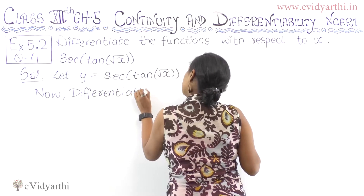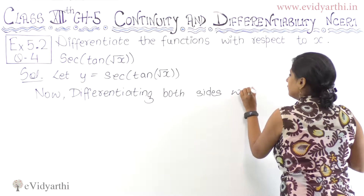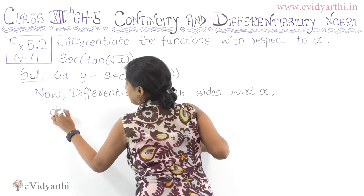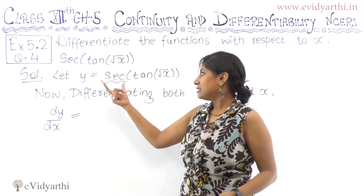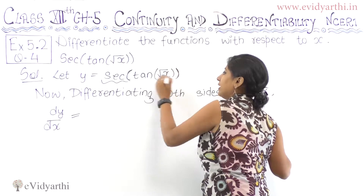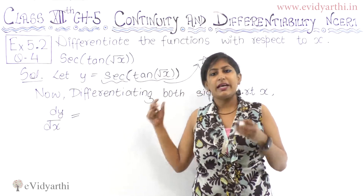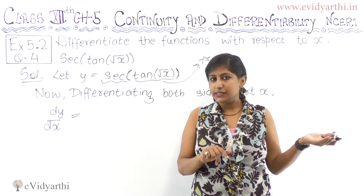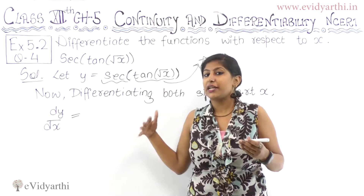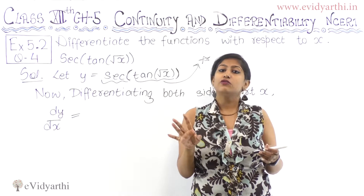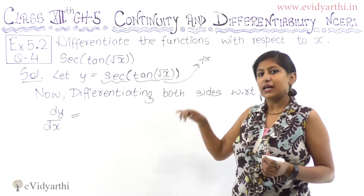What will we get after differentiating? We differentiate with respect to x. So dy/dx — that is y dash. First let's deal with sec. The derivative of sec of something is sec into tan. Remember: the derivative of sec x is sec x tan x. Remember all the trigonometric formulae — there are only these 6 trigonometric ones right now. The derivative of sec star is sec star tan star.